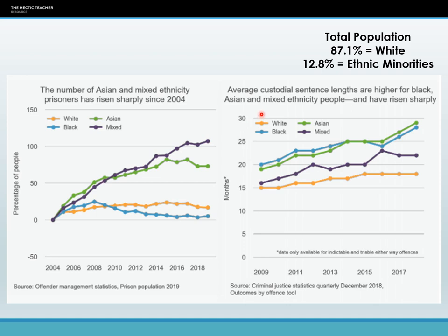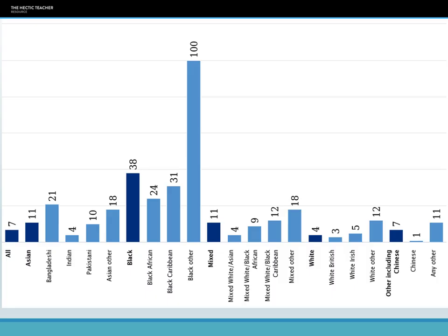If we look at graph two — looking at the length of custodial sentences — we can see that ethnic minorities, black, Asian, and mixed, all have longer sentences than whites. In 2018, the average sentence for a white person was around 18 months, whereas for black and mixed groups it was around 22–24 months, and for Asian and black groups between 25 and 30 months — almost a year's difference.